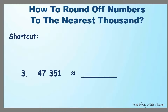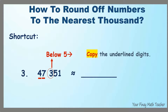Number 3: underline the thousands digit, which is 7, and also the digit to its left. Look at the digit to its right. If it is below 5, copy the underlined digits. Since the encircled digit is 3, copy 47 and the remaining digits — 3, 5, 1 — become 0s.